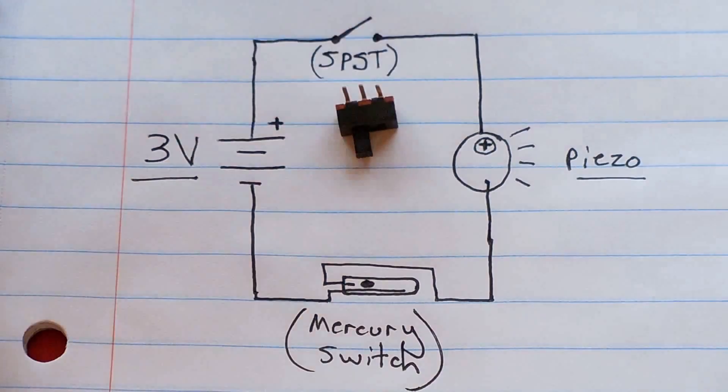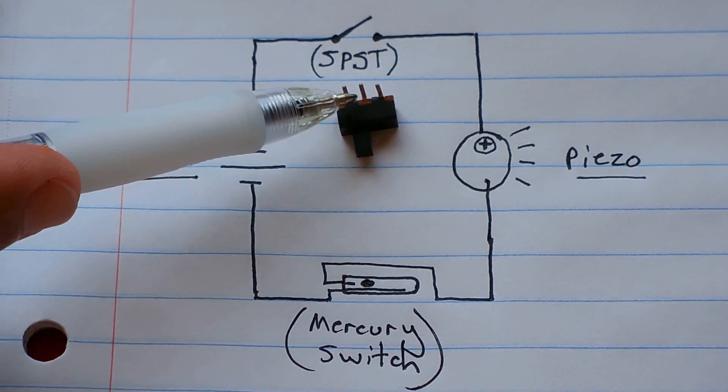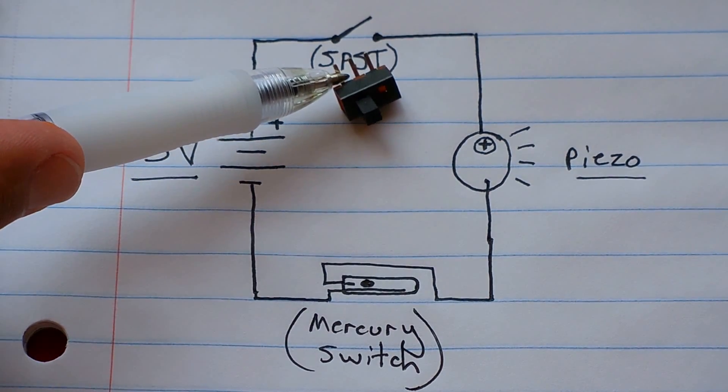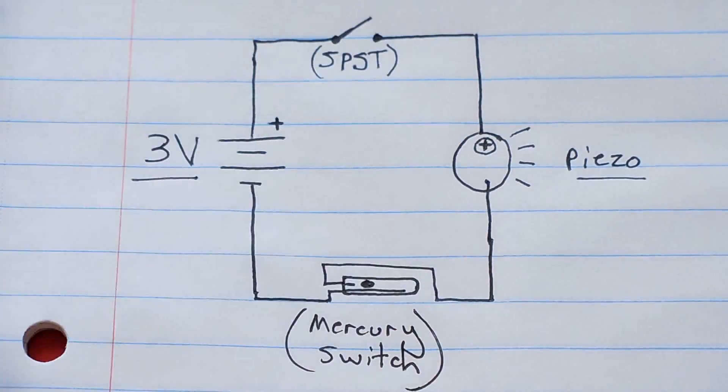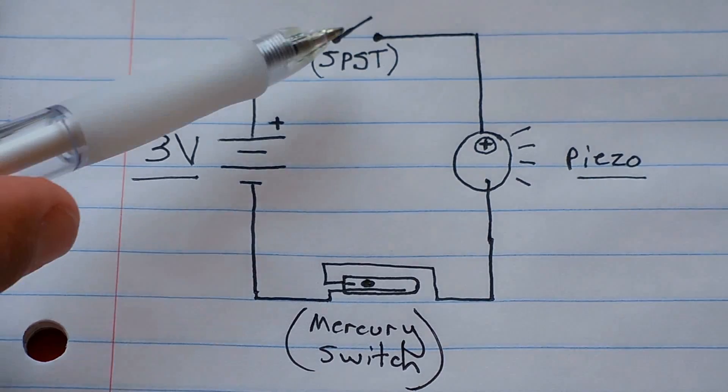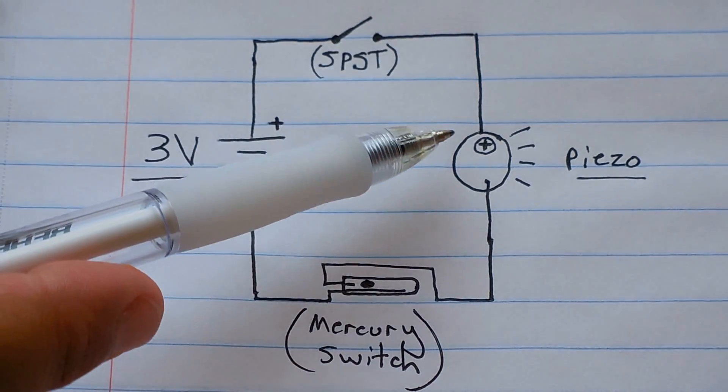I only had a single pole double throw, three pins. So one pin is not going to be used on that as you'll see when I show you how to set everything up. The other side of the switch goes into the piezo alarm, positive.